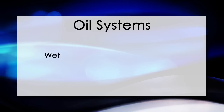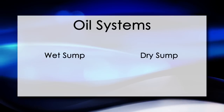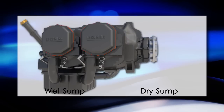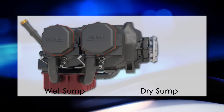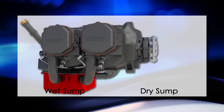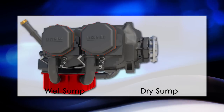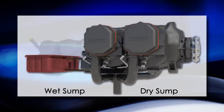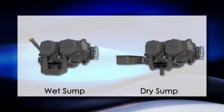There are two types of oil systems: a wet sump system and a dry sump system. A wet sump system, like that of a Cessna 172, is a system in which the oil is located in a tank at the base of the engine, making it an integral part of the engine. On the other hand, a dry sump system has a separate oil tank, which separates the oil system from the engine.